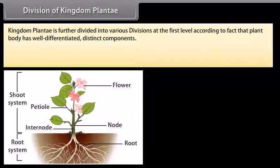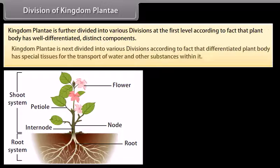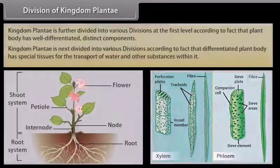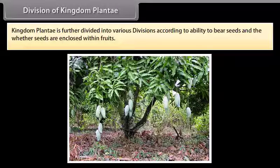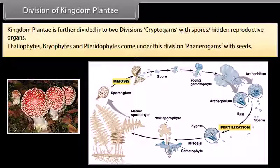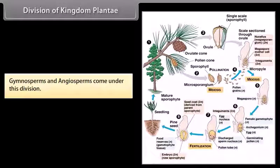Kingdom Plantae is further divided into various divisions. At the first level, classification is according to whether the plant body has well-differentiated distinct components. Next, it is divided according to whether the differentiated plant body has special tissues for the transport of water and other substances. Further, it is divided according to the ability to bear seeds and whether seeds are enclosed within fruits. Kingdom Plantae is broadly divided into two divisions: Cryptogams (with hidden reproductive organs, including thallophytes, bryophytes, and pteridophytes), and Phanerogams (with seeds, including gymnosperms and angiosperms).